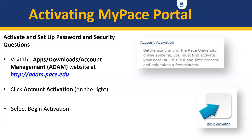You can start the activation process by going to adam.pace.edu. When you click on account activation and begin activation, you will need additional information such as your Pace University username.